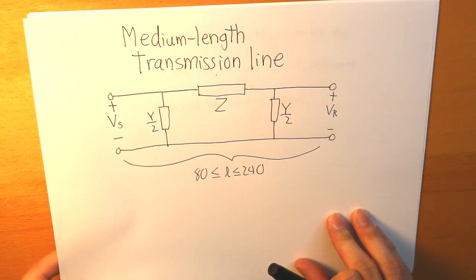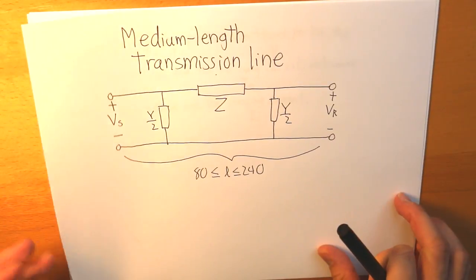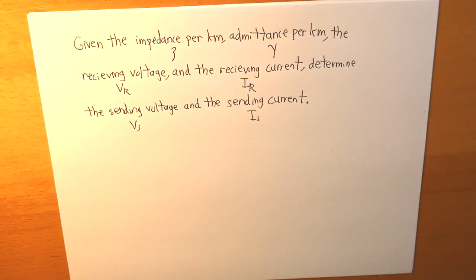So let's move on to a certain question about this. The question is, given the impedance per kilometer, the admittance per kilometer, the receiving voltage and the receiving current, determine the sending voltage and the sending current. Say that we got values for our motor, then we have to find what our values for our generator is, aka the sending voltage and the sending current.